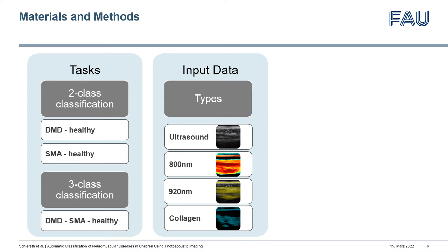In total, we have 10 patients for each disease and 20 healthy volunteers. The data was acquired using a handheld photoacoustic imaging system. We performed each of the tasks using ultrasound images, photoacoustic images at 800 and 920 nm, and images with collagen, a spectrally unmixed signal.